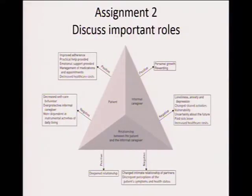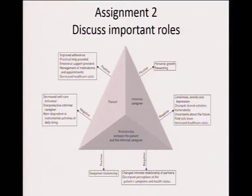I've shared a pyramid to illustrate the roles of home-based caregivers. Within the pyramid there are three things: the patient itself, the informal caregiver, and the relationship between the patient and the caregiver. In your discussion and assignment, you have to bring out the needs of a patient, the role of a caregiver, and the relationship between both of them. Discuss what positive and negative factors exist for both the patient and the home-based caregiver.